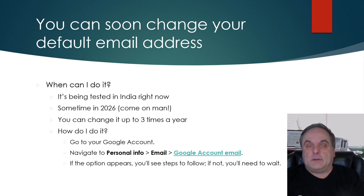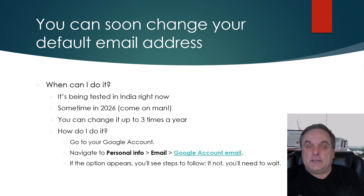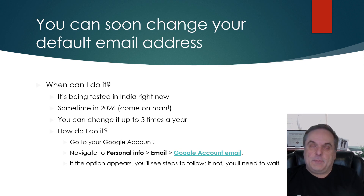So how do you do this? How do you check if this is available for you, and if it is, how do you make that change? Go into your personal info, then email, and click on your Google account email. You may see the option to add a new primary address and keep your old email address as your alias. If you don't see that option, then it's not quite ready yet and you'll have to wait a little bit longer. That is what's happening with your new @gmail.com address, how it works, when it's going to change, and what alias email addresses mean.